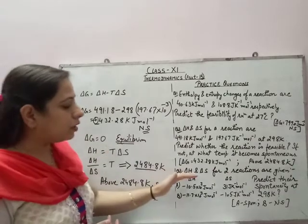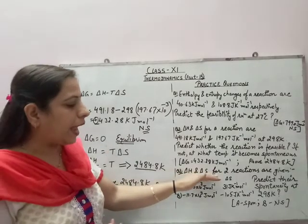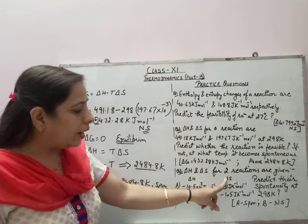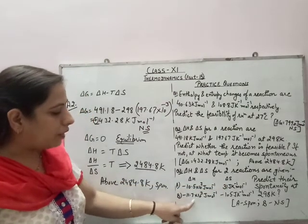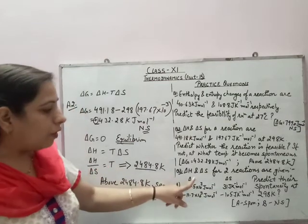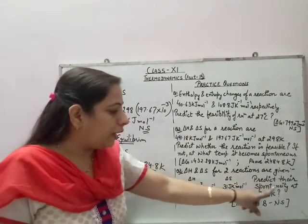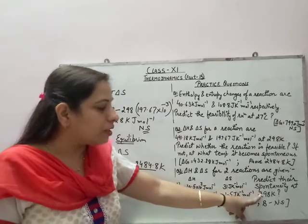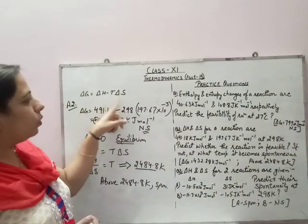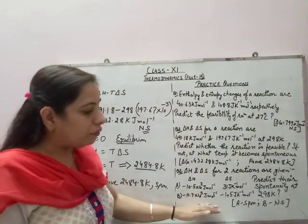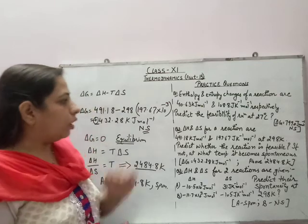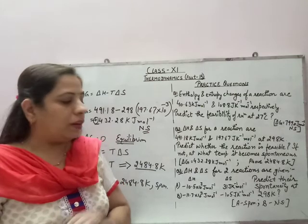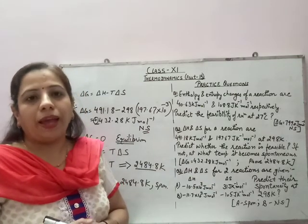In the same way, for the third question, delta H and delta S are given for two reactions. For one reaction, delta H and delta S values are given; for the second reaction, delta H and delta S values are given. We have to predict their spontaneity at 298 Kelvin. Since delta H, delta S, and temperature are all given, just by substituting the values and calculating delta G we can find whether each reaction is spontaneous or not. Try the third question and related questions by yourself. Thank you.